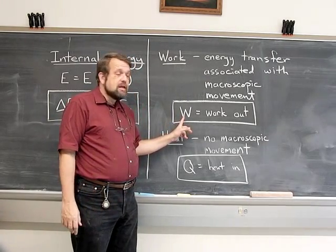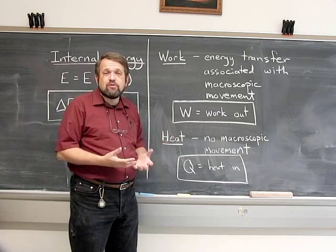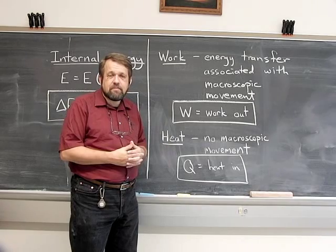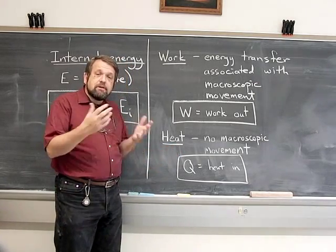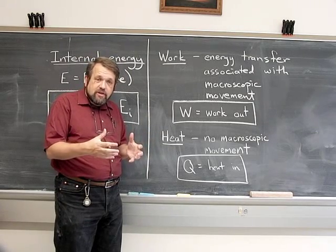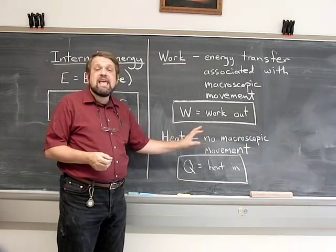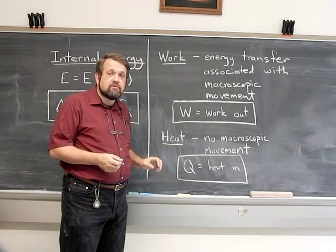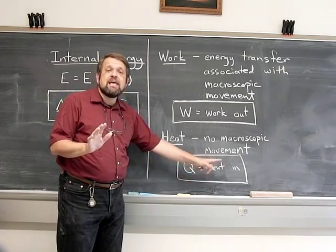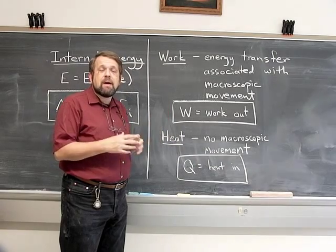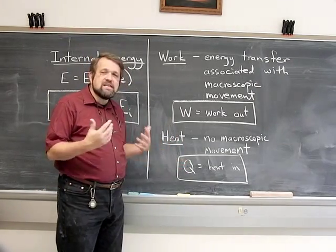W is going to represent the work output of the system — the amount of work that the system exerts on its surroundings in some process. The other kind of energy transfer is heat. This is energy transfer that occurs between systems in contact with each other, but nothing macroscopically is moving — energy just seems to go from one to the other. We'll denote heat by Q, the heat input to the system. So positive work is work coming out of the system, and positive heat is heat flowing into the system.